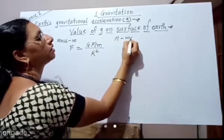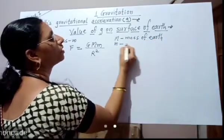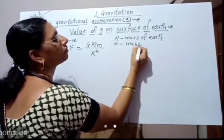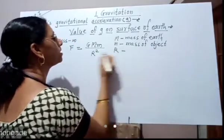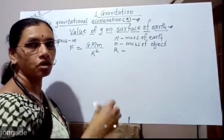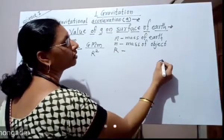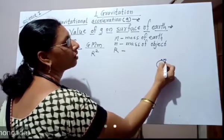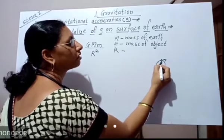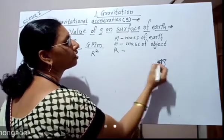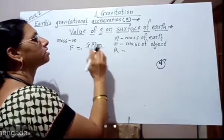Here, capital M is the mass of the earth, small m is the mass of the object, and capital R is the distance between the object and the earth. Now, suppose the object is on the surface of the earth. Then the distance between this object and the center of the earth is nothing but the radius of the earth. Therefore, we substitute r square as R square, where R is the radius of the earth.